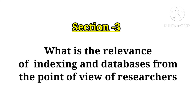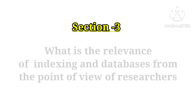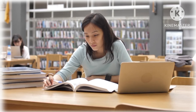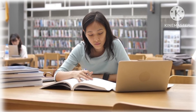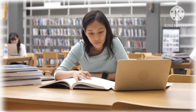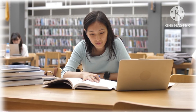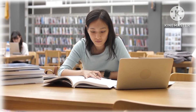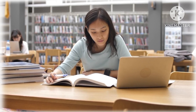In the third and final section, we discuss the relevance of indexing and databases for researchers. Indexes like IEEE, Web of Science, PubMed, and Scopus symbolize high-quality research and genuine work. When your paper is published in an indexed journal, it is evidence of your research quality and high standards. Similarly, when you want to ensure you are reading a quality paper, you should always read from an indexed journal.